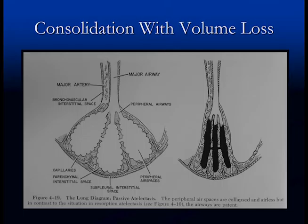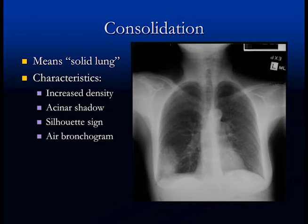Consolidation with volume loss looks like this — the normal is on the left and on the right we can see solid lung with soft tissue inside the air sacs, but there's also volume loss in that the lung is collapsed. Consolidation means solid lung.